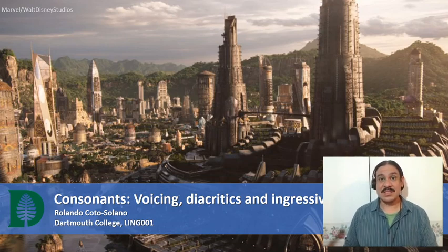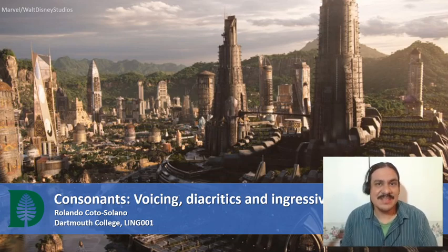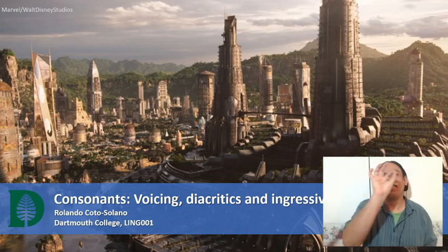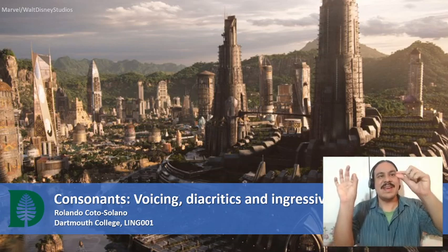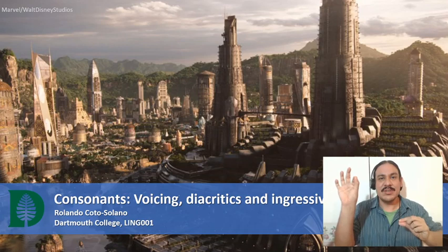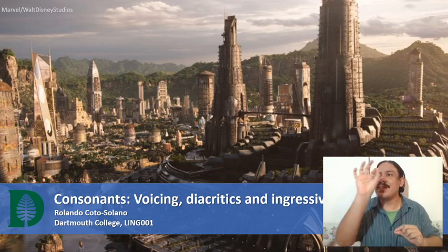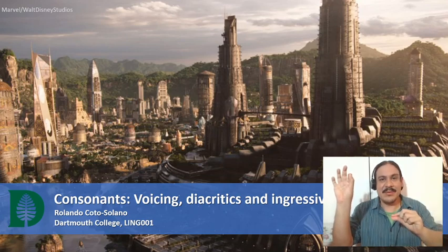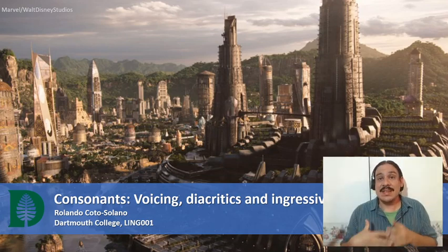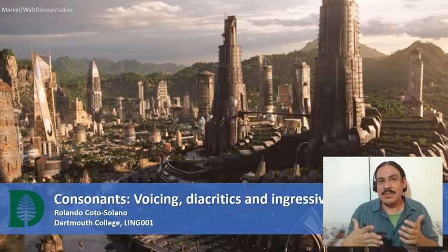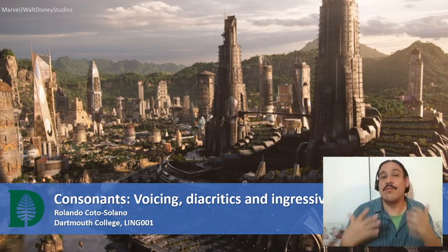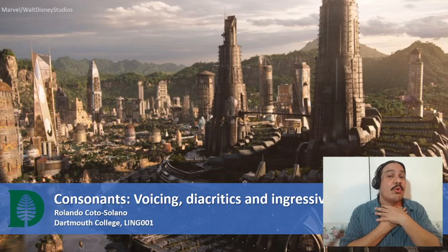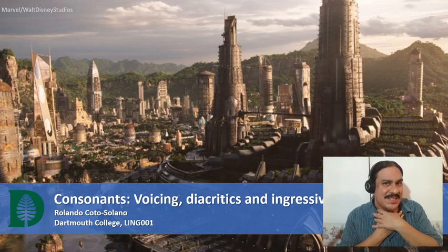In the last couple of videos we've been studying consonants and how we can describe consonants, mainly using place of articulation and the manner of articulation — what your tongue and your mouth are doing and how the air is exiting from your mouth. Here we're going to study a third way in which we can describe consonants: by their voicing, or what your vocal cords are doing as you produce the consonant.